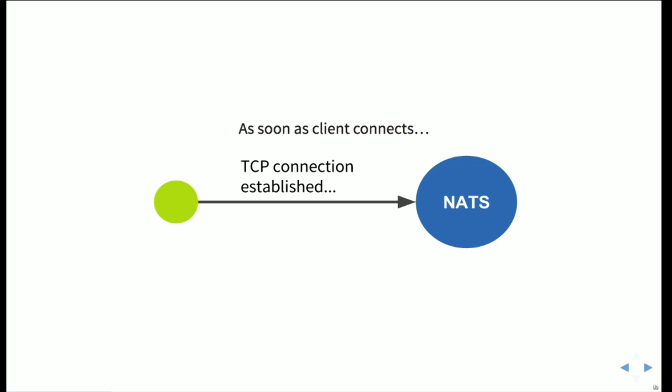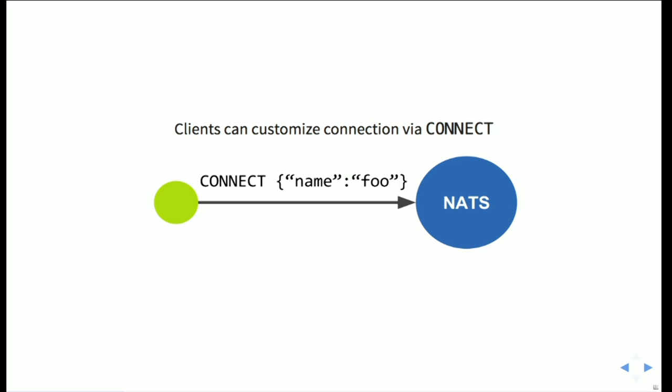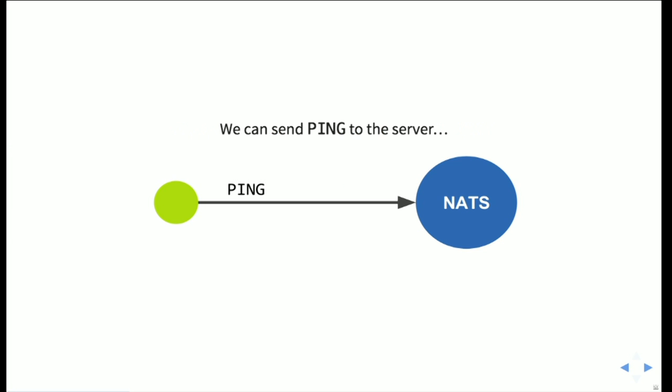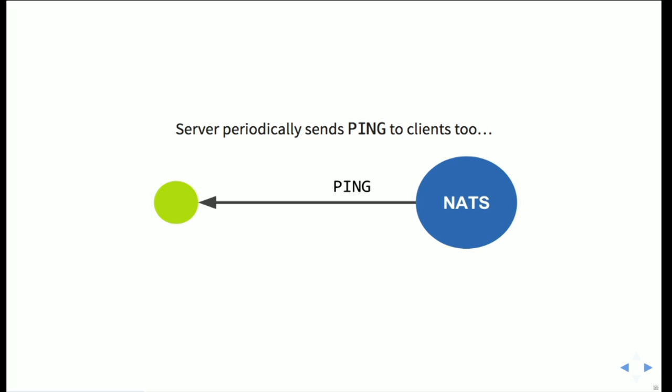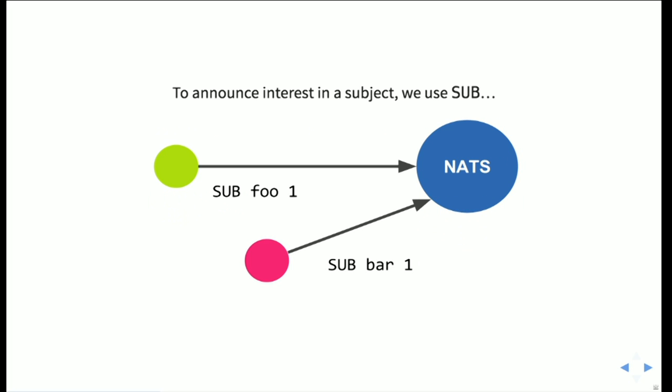Going over how the protocol works: we establish a TCP connection to the server. The first thing we get is the info string, with information such as the maximum payload size, the server's identity, and whether we need to upgrade to TLS. We can customize the connection using the CONNECT protocol line with a JSON payload — for example, labeling the client 'foo' so it's identifiable through the NATS monitoring port. You can send PING to the server and receive PONG back. The NATS server also periodically sends PING, and the client must reply with PONG — otherwise the connection is terminated.